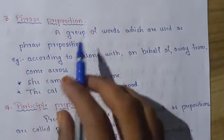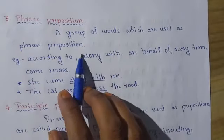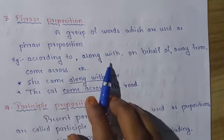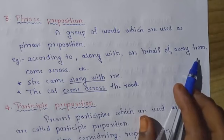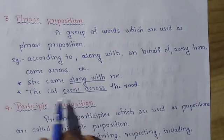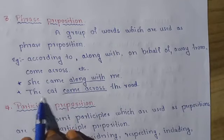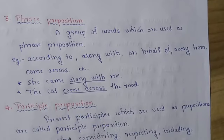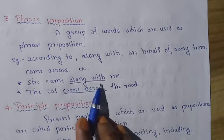The third one is phrase preposition. A group of words which are used as phrase prepositions. For example: according to, along with, on behalf of, away from, come across, etc. For example: She came along with me. The cat came across the road. Like this we can use a group of words.